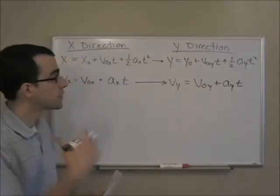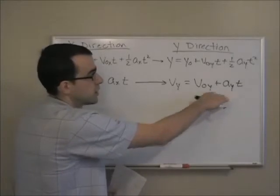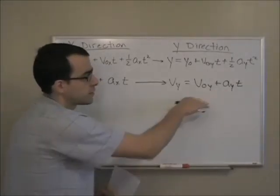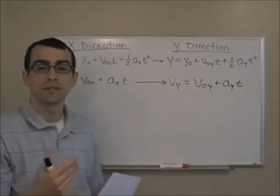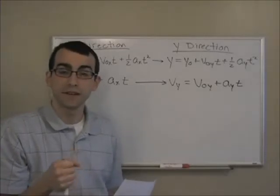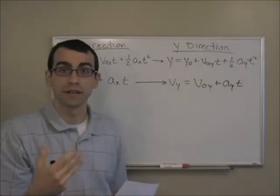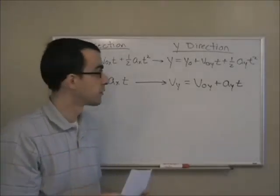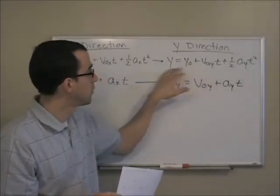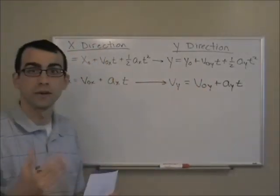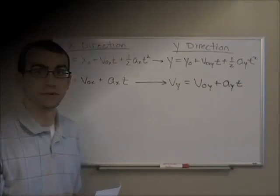First, what we're going to do is focus on these different variables. These variables are going to look a little bit different because we're focusing on the fact that this is a specific type of constant acceleration problem, namely projectile motion. Our first goal is going to be to look at these variables a little bit closer and define what they actually equal in projectile motion.